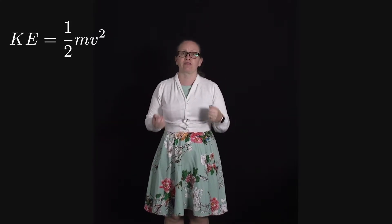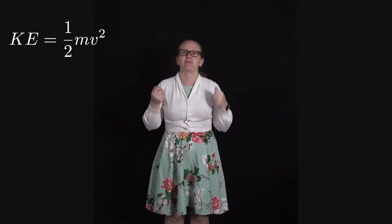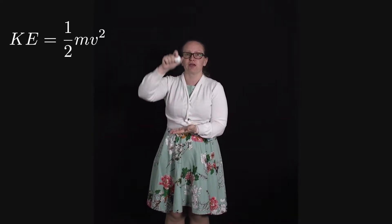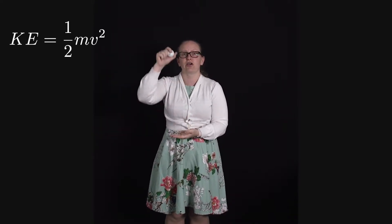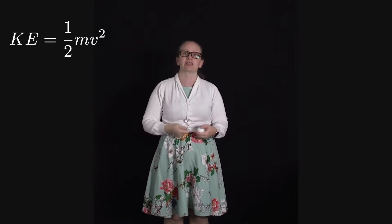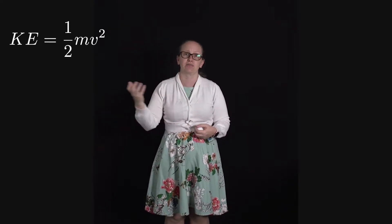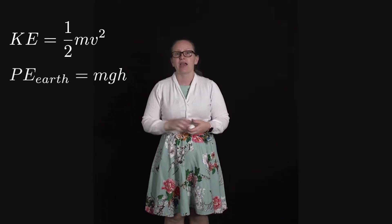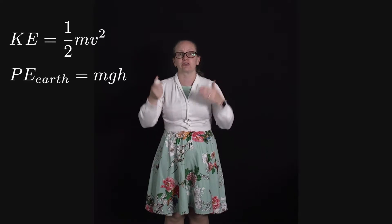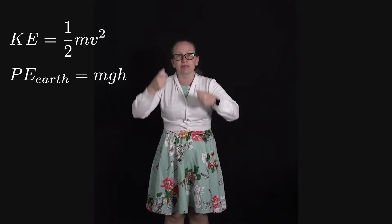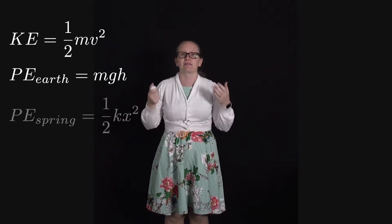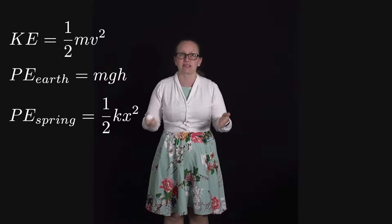We've also looked at a few different types of potential energy. We've seen that there's potential energy in the earth's gravitational field close to the earth, which is given by mgh, and we've also seen the potential energy which can be stored in a spring when we stretch it, which is given by ½kx².